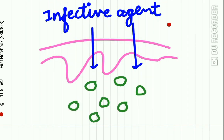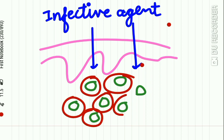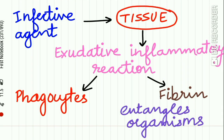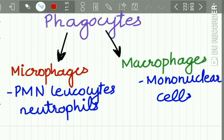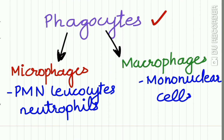The cellular factors responsible for innate immunity are very important. Once the infective agent crosses the epithelial barrier, the cellular factors of the innate immunity mechanism come into play. When the infectious agent attacks the tissue, there is an exudative inflammatory reaction, activation of phagocytes, and fibrin formation. The fibrin entangles the organisms and removes them. The phagocytes that are activated are of two types: microphages and macrophages.